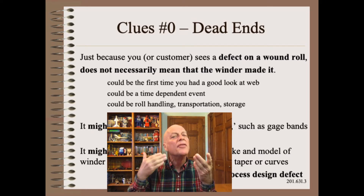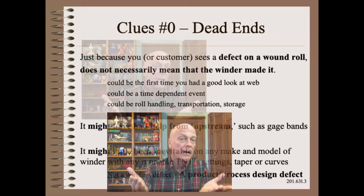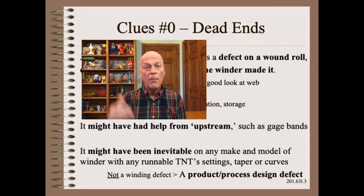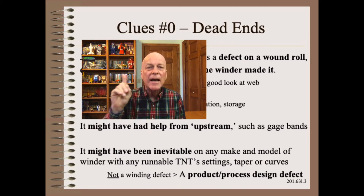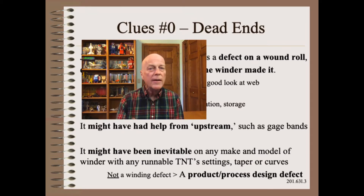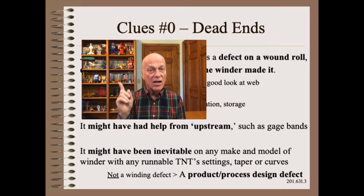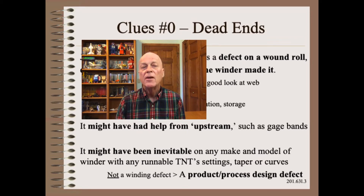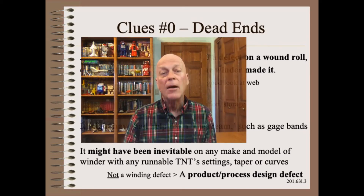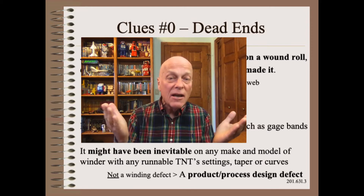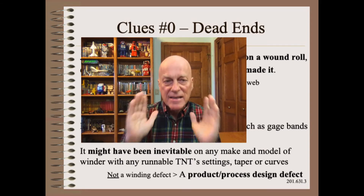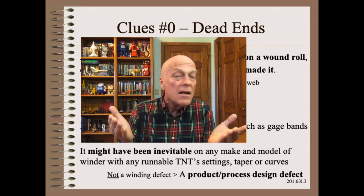Second, even if the defect was made in the wound roll, it might have had help from upstream. Gauge bands and thickness variations from upstream manufacturing and converting is a key element in the mechanics of dozens of defects and makes dozens worse, even if the thickness variations in and of themselves are not the root cause. Third, even if the defect was made on the winder, it might have been inevitable. There are a dozen defects that will happen on any make and model of winder under any TNT settings.